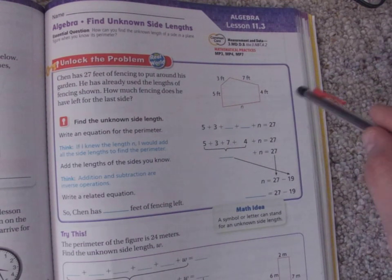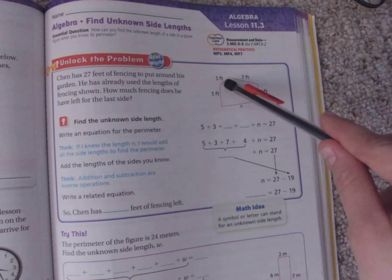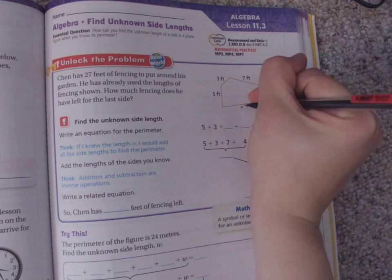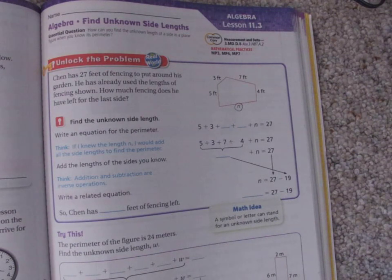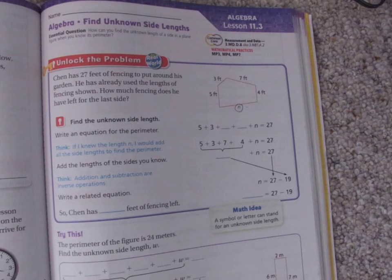So what we need to do is we need to look at his yard. Here's the fencing around his yard. So he has a fence that's 5 feet, 3 feet, 7 feet, 4 feet, and then this n is just kind of a fancy way of saying, is kind of a fancy way of telling us the length that we're trying to find. So it's just that number. So think of n as number we need to find.